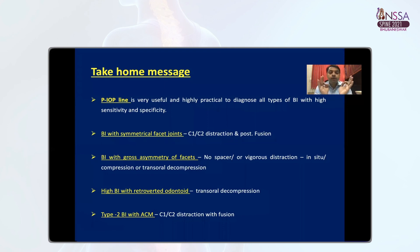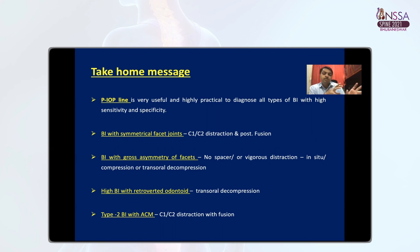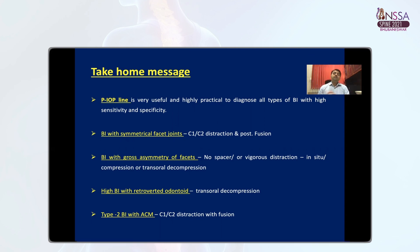In conclusion: the PIOP line is very useful and highly practical to diagnose all types of BI — that is why we call it universal, with high sensitivity and specificity. Our protocol: BI with symmetrical facet joint — C1-C2 distraction and posterior fusion. BI with gross asymmetry of facet joint — we never apply a spacer or vigorous distraction; rather, we prefer in-situ fixation at C2 or sometimes compression to try to reduce it. If associated with high BI, we still perform transoral decompression for high BI and retroverted odontoid. For Type 2 BI with ACM — C1-C2 distraction and fusion. Thank you.